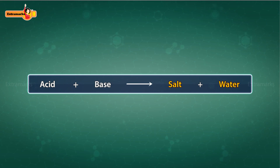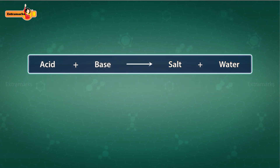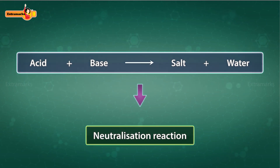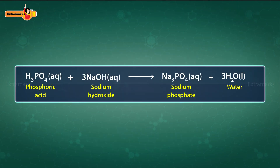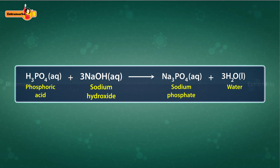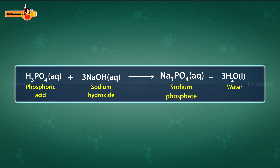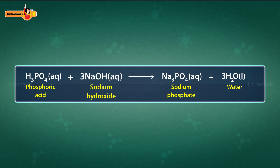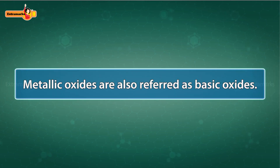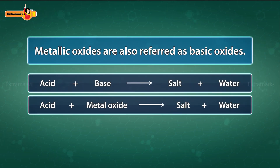Another class of compounds with which acids react is bases. Salt and water are the products of this reaction, which is called a neutralization reaction. For example, the reaction of phosphoric acid and sodium hydroxide forms sodium phosphate and water. It is also interesting to note that metallic oxides can be referred to as basic oxides, because they give the same products — salt and water — on reaction with acids.